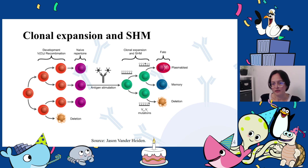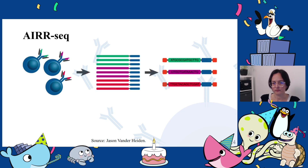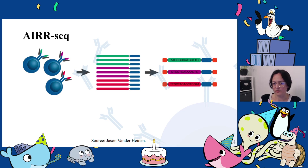Identifying and analyzing the lineages that define these clonal expansions can provide biological insights. Studying BCRs and being able to identify groups of B cells that belong to the same lineage — because they originate from the same ancestor cell — gives us a lot of information. It can be used to identify signatures of immune responses, study antibody development, and guide development of vaccines and antibody therapies.